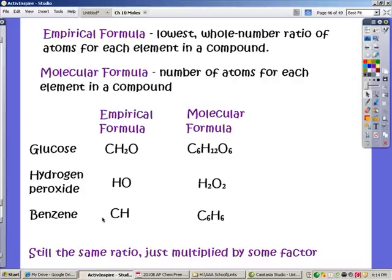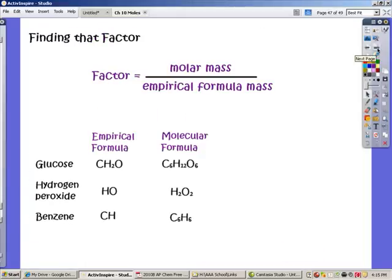So we can see that the difference or the way to relate empirical and molecular formulas to each other is that they're still going to have exactly the same ratio of atoms in that compound. It's just that one's going to be multiplied by some factor. The molecular formula is going to be multiplied by some factor that's going to make it bigger. It's going to multiply all of the subscripts.